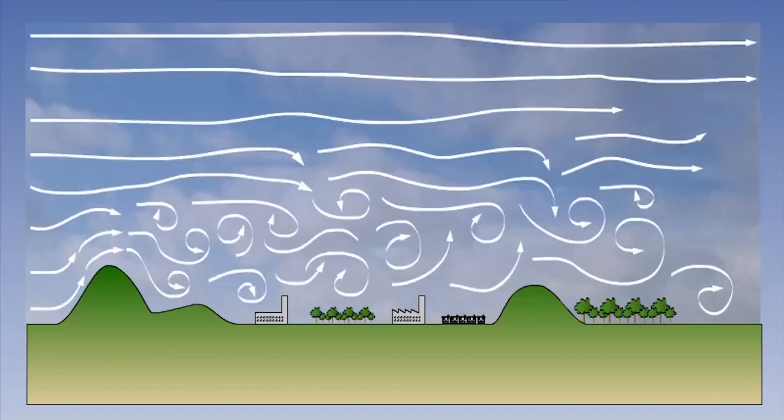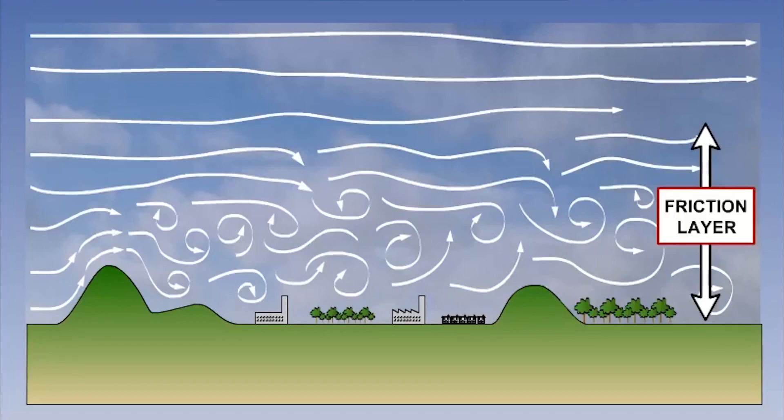One of the most common causes of turbulence is the surface over which the airflow is moving. The layer of air that is disturbed is known as the friction layer.